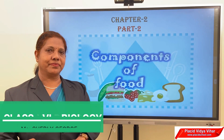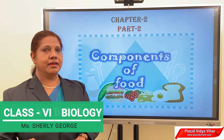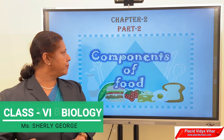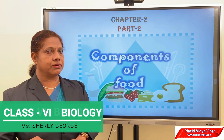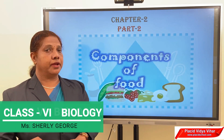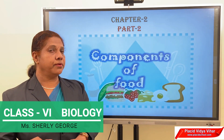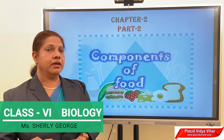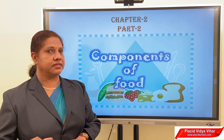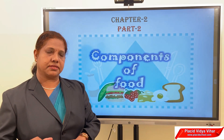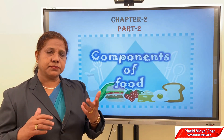Welcome back. Today we are going to study Chapter 2: Components of Food, Part 2. In the last class, we studied about the different nutrients. We have seen that there are five major nutrients in our food: carbohydrates, fats, proteins, vitamins, and minerals. I hope all of you have studied well.